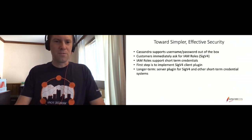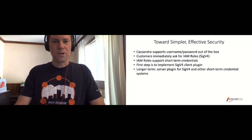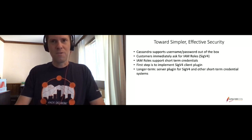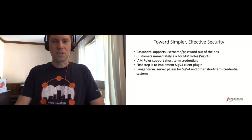IAM roles are a way of associating a role with a container or an instance such that you get automatically rotated short-term credentials that are essentially transparent to the client for their use. Our immediate goal then was to implement a SIG V4 client plugin because IAM authentication uses the SIG V4 authentication protocol. But longer term, we wanted to think about how we could expose SIG V4 outside of Amazon Keyspaces, and also how we might be able to contribute to supporting other short-term credential systems in Cassandra.